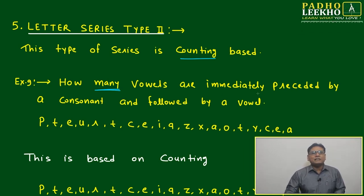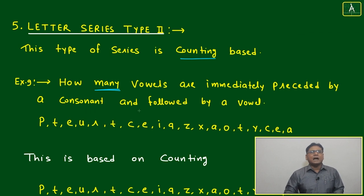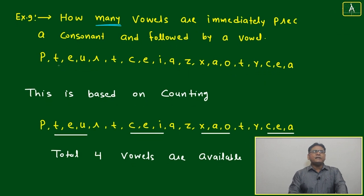How many vowels are immediately preceded by a consonant and followed by a vowel? Let's look at this series: P, T, E, U, R... something is written.